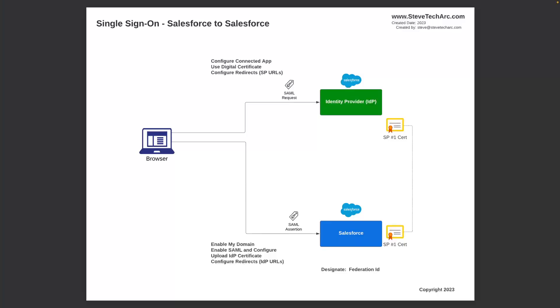This will let a user exist in both orgs and be able to traverse between them with only one set of credentials. We're going to have one Salesforce org as the identity provider and one Salesforce org as the service provider. The end goal is that a user can log in via the identity provider and then access a second service provider org without logging in again — providing seamless single sign-on.